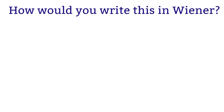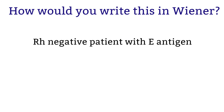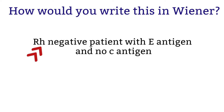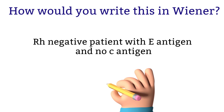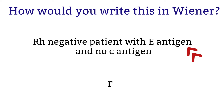Let's try one more example. An RH negative patient with E antigen and no C antigen — how would you write that in Wiener terminology? This patient is RH negative, which means the patient is missing D antigen, so missing D antigen will be represented with lowercase r. Keep in mind that E antigen is associated with number two for RH positive and double prime for RH negative. Since this patient is RH negative, we would use the double prime. When we put that together, we would have little r with superscript double prime.